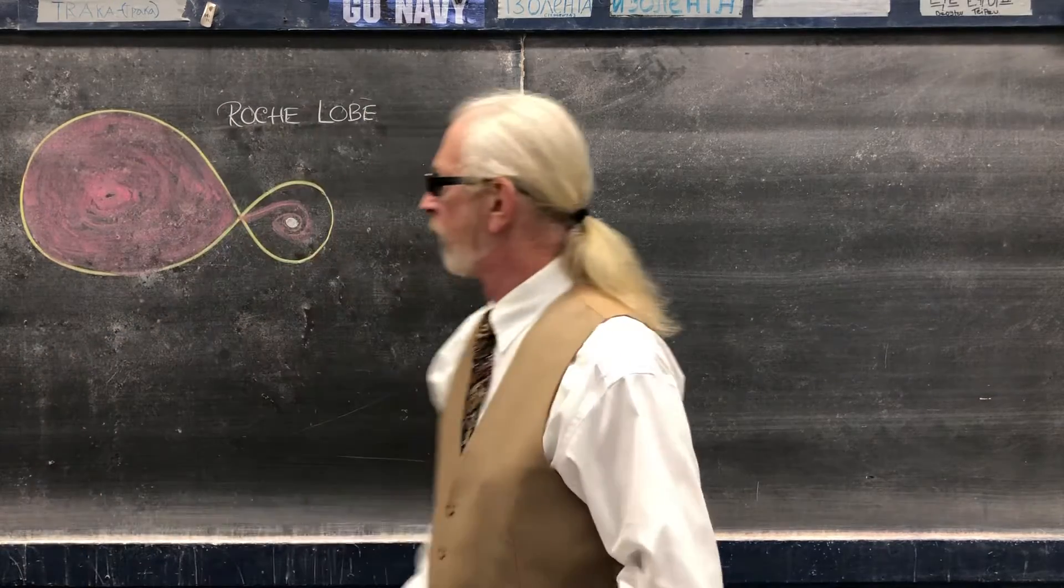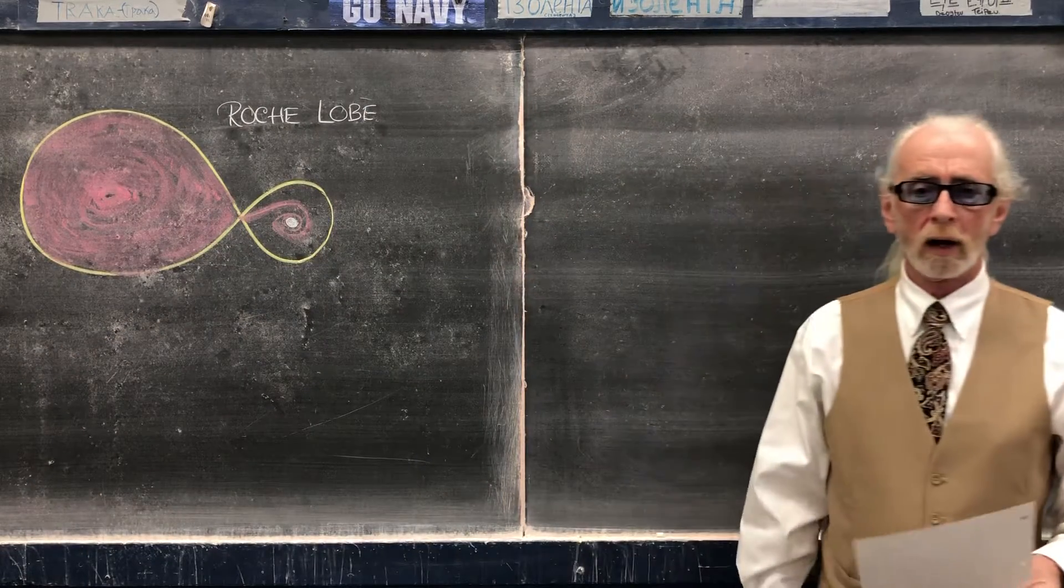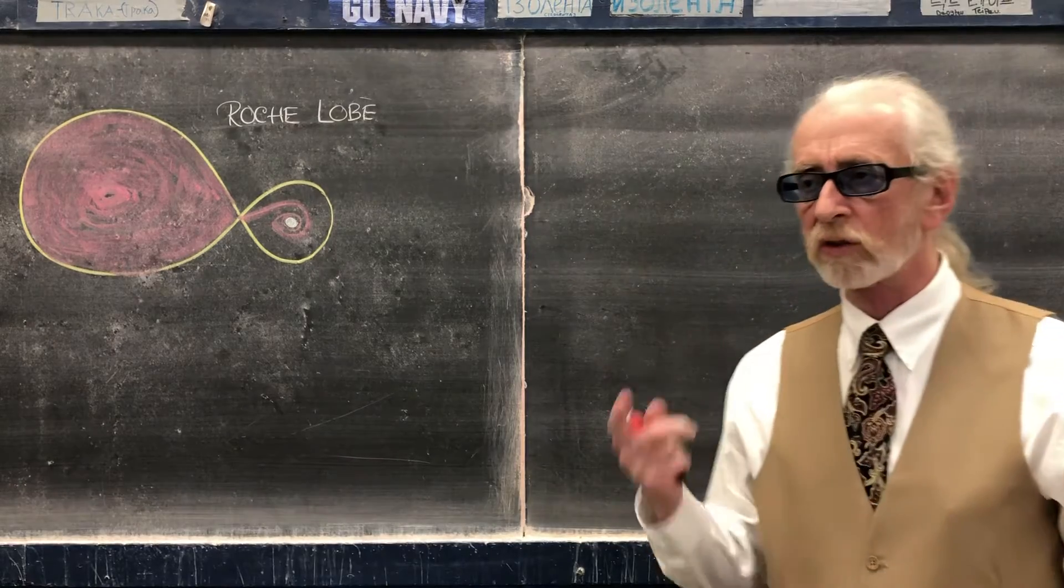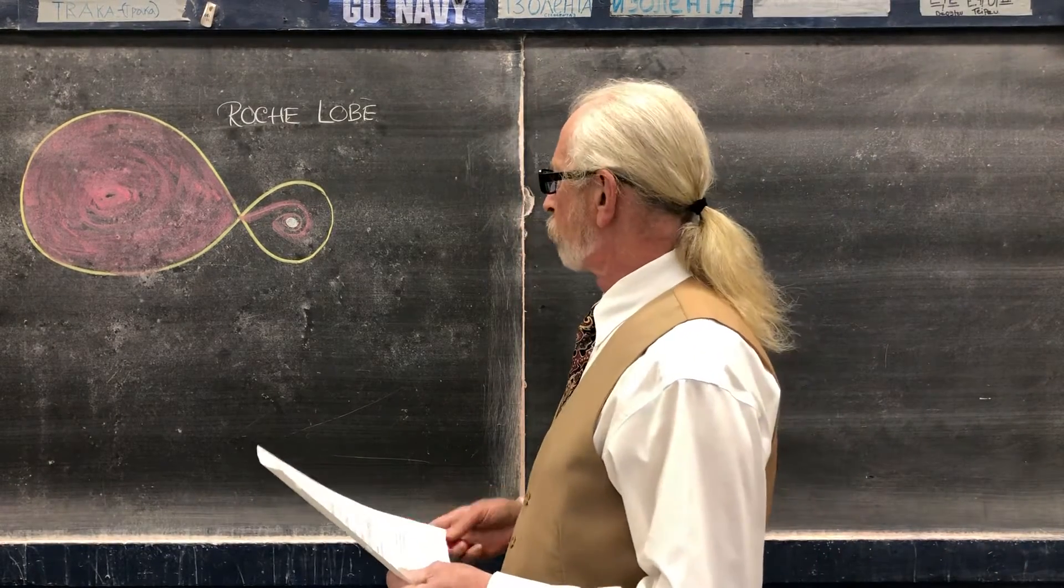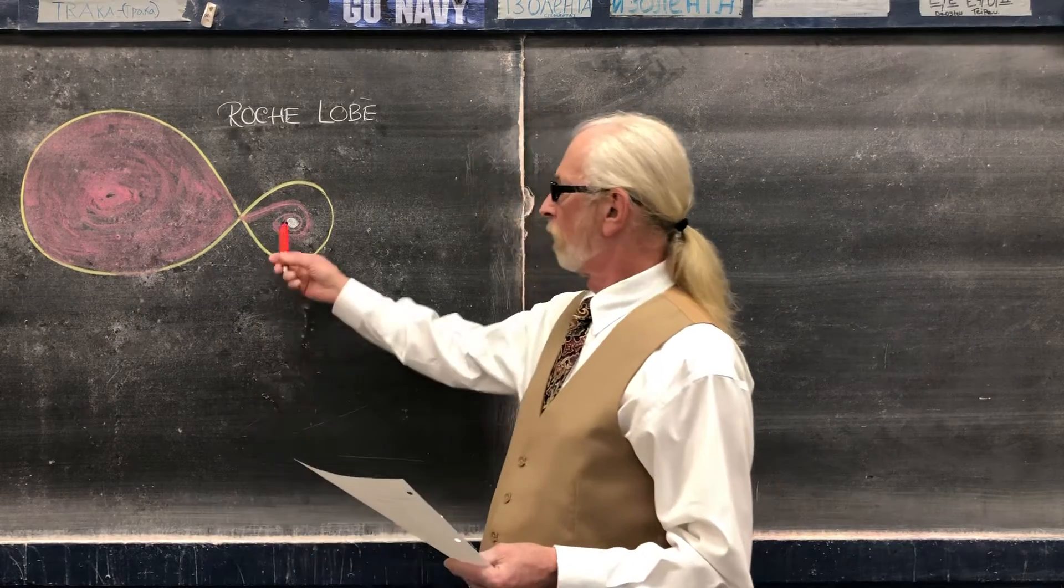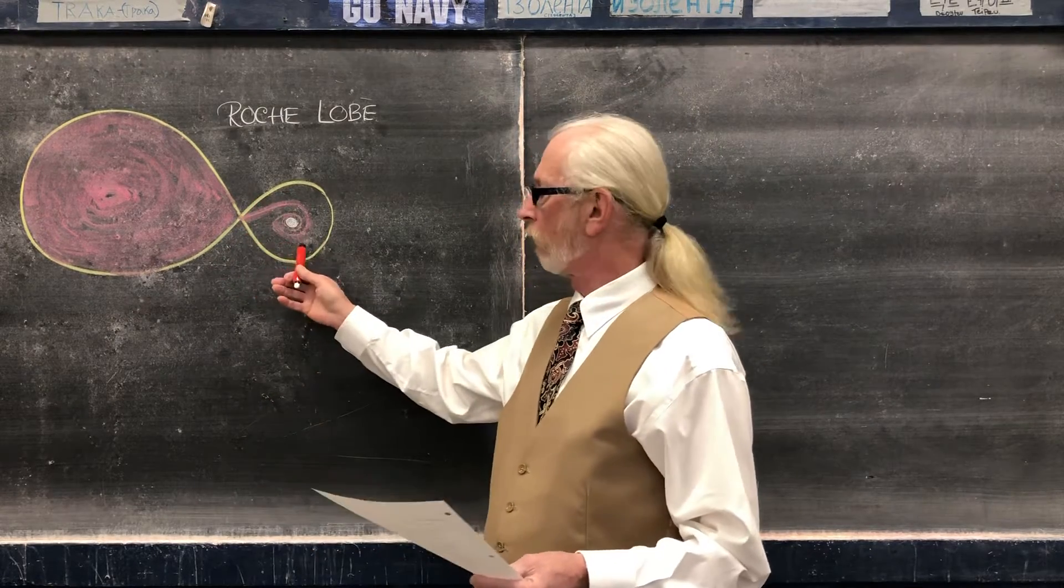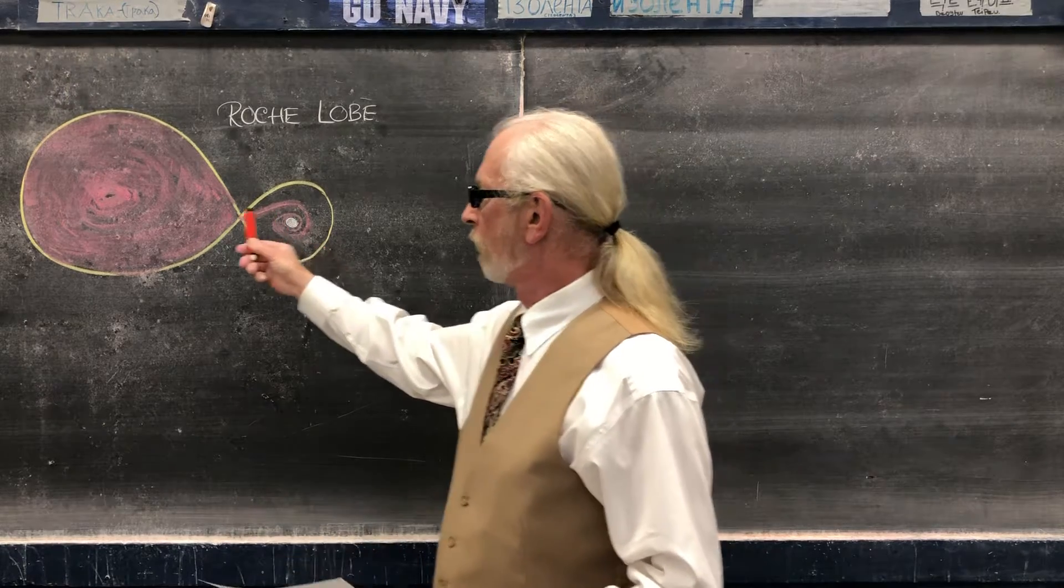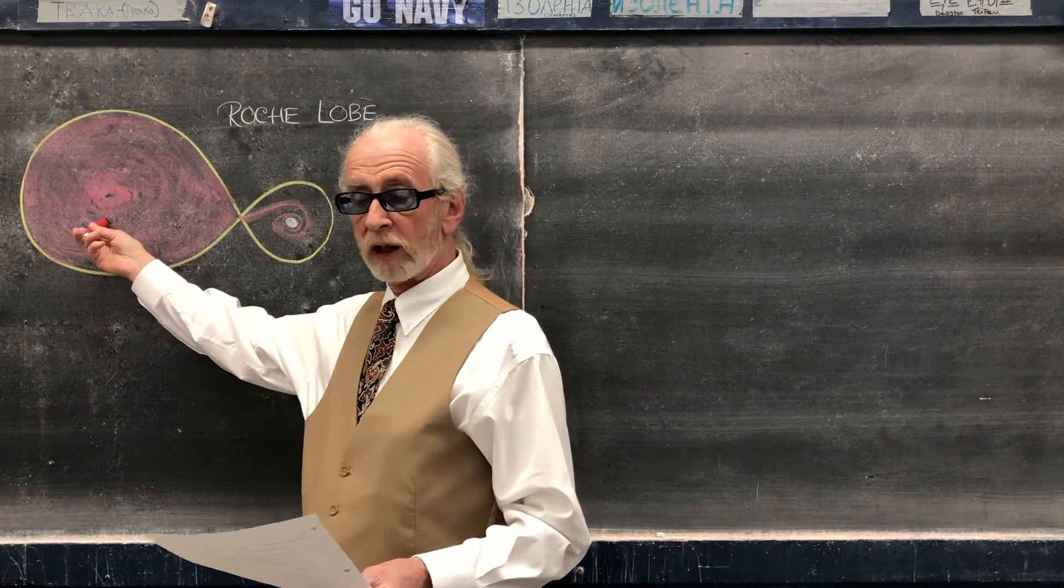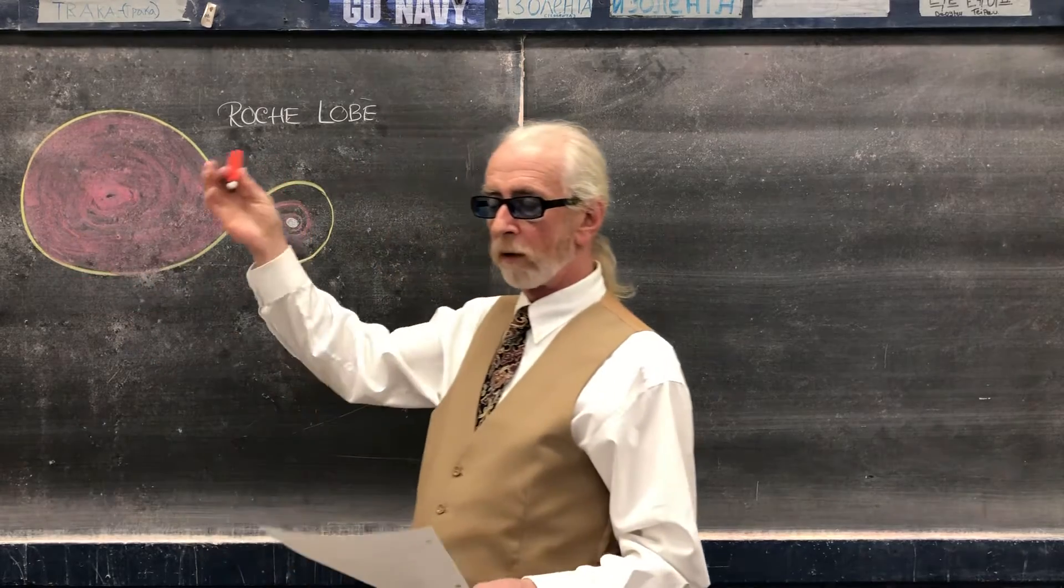Okay, what is a Roche lobe? Well, it's when you have a pair of stars in a binary system orbiting one another. So here, in this case, obviously this is not to scale, but it will serve. Here we have a white dwarf and a red giant here. They're a binary system, they're orbiting one another.